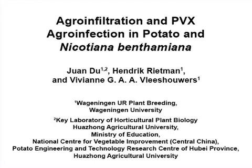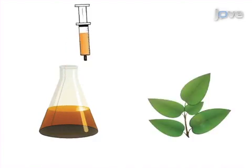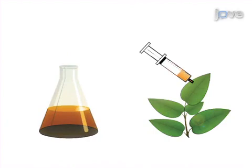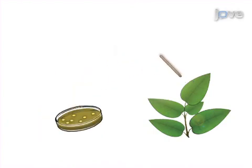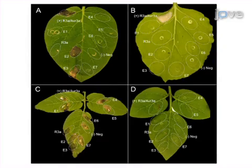The overall goal of the following experiment is to test whether effectors of pathogens are recognized by resistant proteins in plants. This is achieved by first infecting plant leaves with a liquid culture of agrobacterium or through PVX agroinfection, which will transiently express effectors in the plant tissue. The plants are then allowed to incubate and scored for cell death responses based on recognition of transiently expressed effectors by resistance proteins.